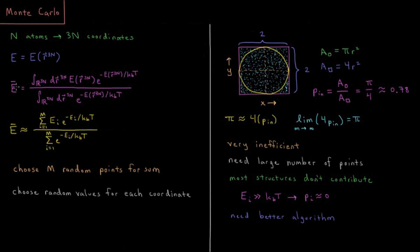any average property of our system which depends on the coordinates is equal to an integral over all space in all 3N of the coordinates of those dimensions of the energy value at every point in space times the Boltzmann factor of each of those coordinates. So the energy divided by Boltzmann constant times temperature at each value in space.